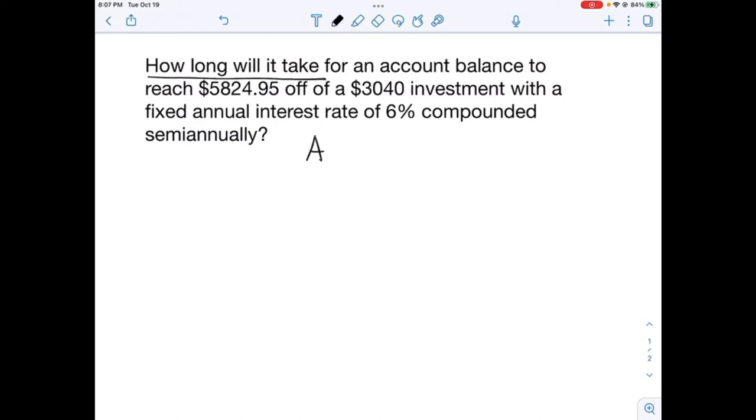We should know what our compound interest formula is. A = P(1 + r/n)^(nt). That's the formula.